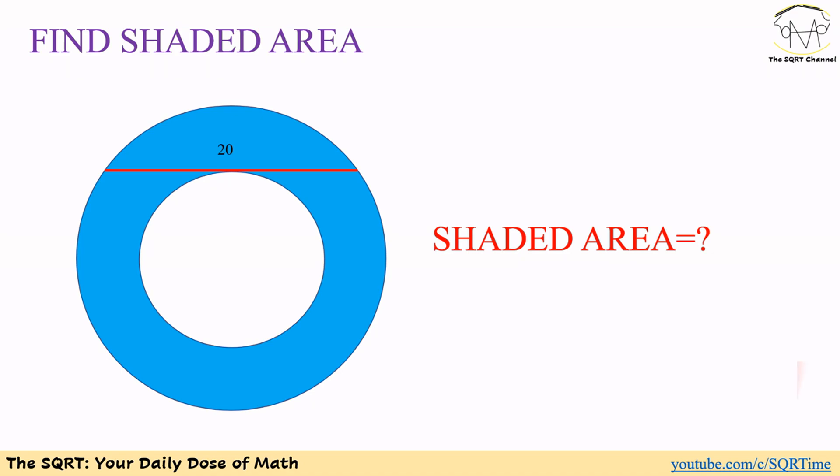We have a ring and there is a straight line in red as you can see here. This line is basically a tangent to the small circle that we have here. We know that the length of this straight line is 20. Based on that we are going to find the area that we have here in blue.